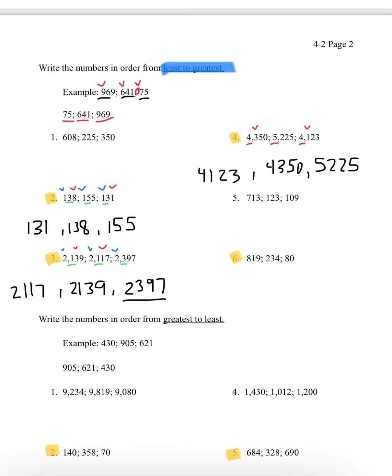Lastly for this section, number 6 — we have 819, 234, and 80. In the 100th place we have an 8, a 2, and no 100th digit for 80, so we call it a 0. 0 is the least, so 80 goes first. We then see an 8 and a 2 — since 2 is less than 8, 234 comes next, and our greatest number is 819. The order is 80, 234, and 819.